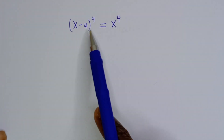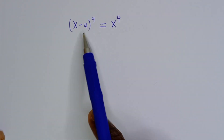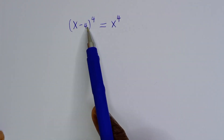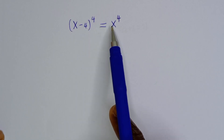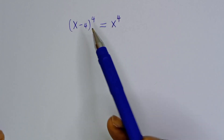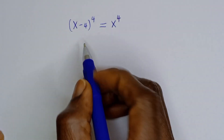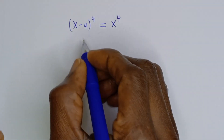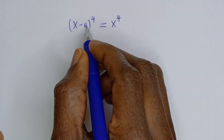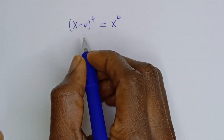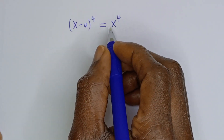Hello. How to solve for S from this given equation: x minus 4 to the power of 4 is equal to x to the power of 4. Solution. We have x minus 4 to the power of 4 is equal to x to the power of 4.